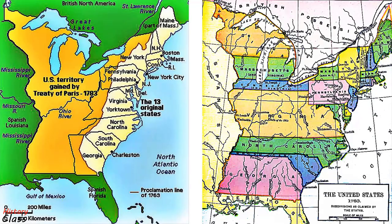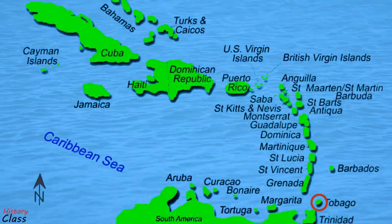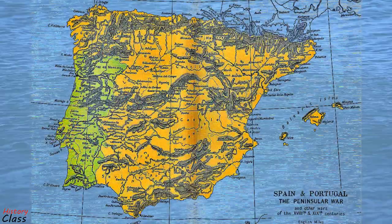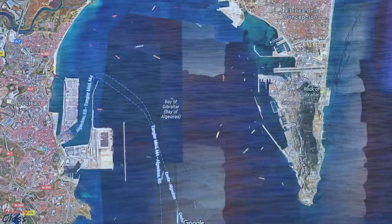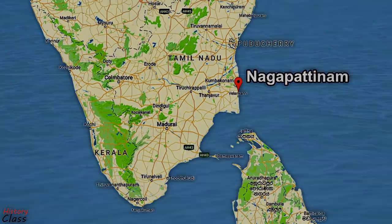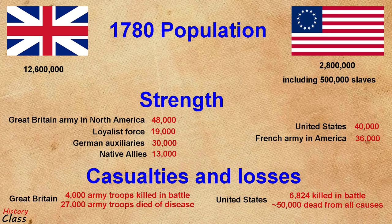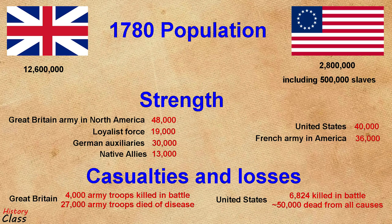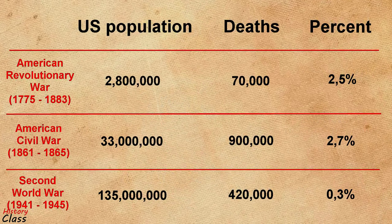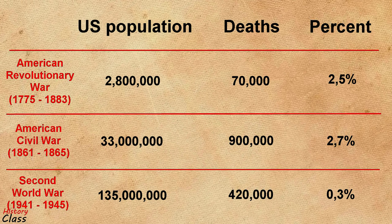Britain agreed to recognize the sovereignty of the United States over the territory bounded roughly by present-day Canada to the north, Florida to the south, and the Mississippi River to the west. While French involvement proved decisive for the cause of American independence, France made only minor territorial gains and incurred massive financial debts. Spain acquired Britain's Florida colonies and the island of Minorca, but failed in its primary aim of recovering Gibraltar. The Dutch lost on all counts and had to cede Nagapattinam to the British. The total loss of life throughout the war is largely unknown. As was typical in the wars of the era, disease claimed far more lives than battles. At least 25,000 American patriots died during active military service. Proportionate to the population of the colonies, the Revolutionary War was at least the second deadliest conflict in American history, ranking ahead of World War II and behind only the Civil War.